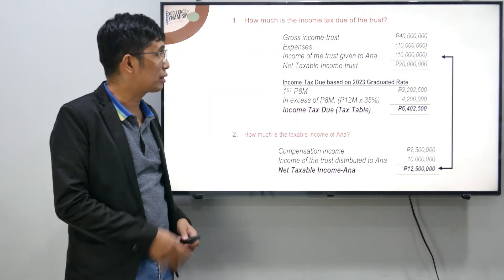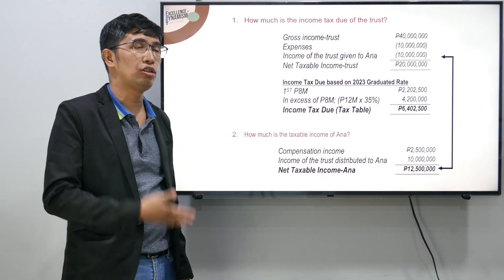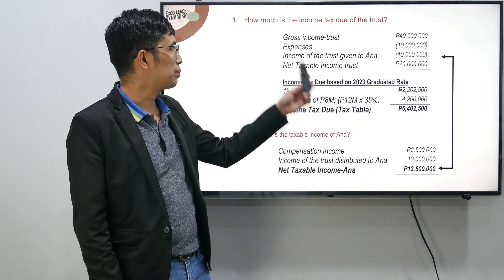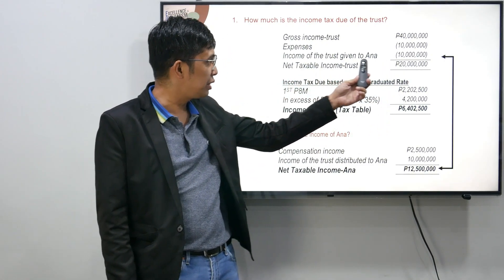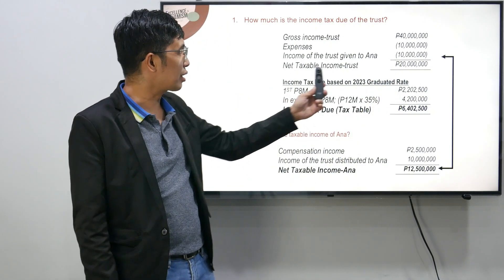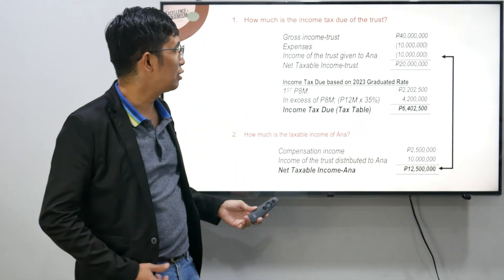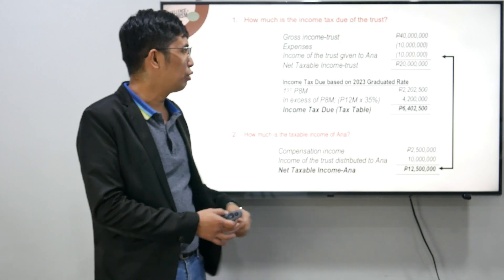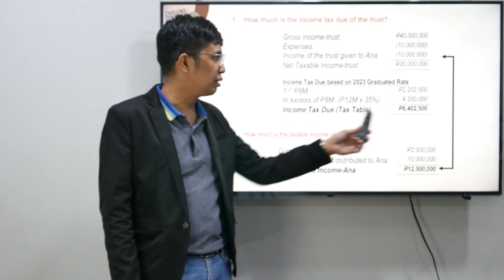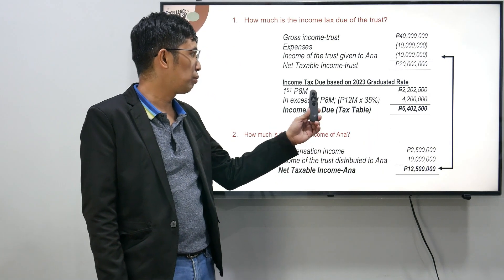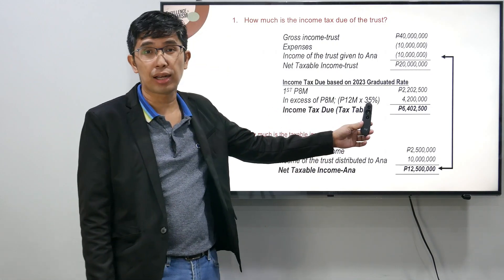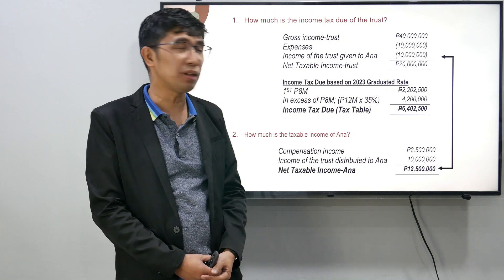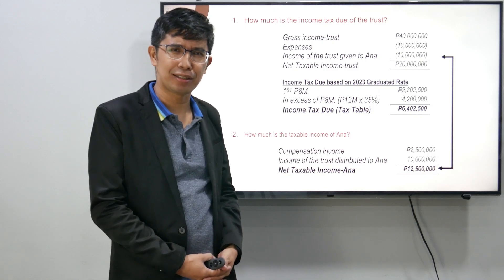Let's compute. How much is the income tax due of the trust? Gagamitin natin yung graduated tax rate or yung tax table for individuals. Ang rental income daw ni trust ay 40 million, may expenses na 10 million, at may income ng trust na ibinigay kay Anna — special deduction — so net taxable income ng trust ay 20 million. Gamiting natin yung graduated tax rate for 2023: based sa ating graduated rate ng 2023, first 8 million ay may tax na 2,410,000. Tapos yung sobra or in excess of 8 million ay 35%. So yung taxable income ng 20 million, ang income tax nyan ay 6,410,000. Grabe ang income tax ng individual!